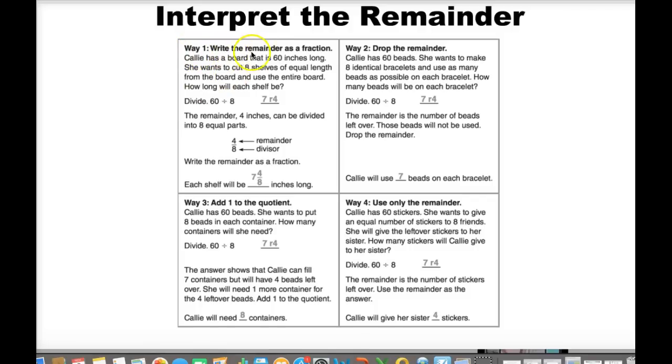The first thing that you could do is write the remainder as a fraction. So if you look right here, you would write your remainder as a fraction. Way two is to drop the remainder, you just don't even use the remainder, because the word problem might not need you to use the remainder.